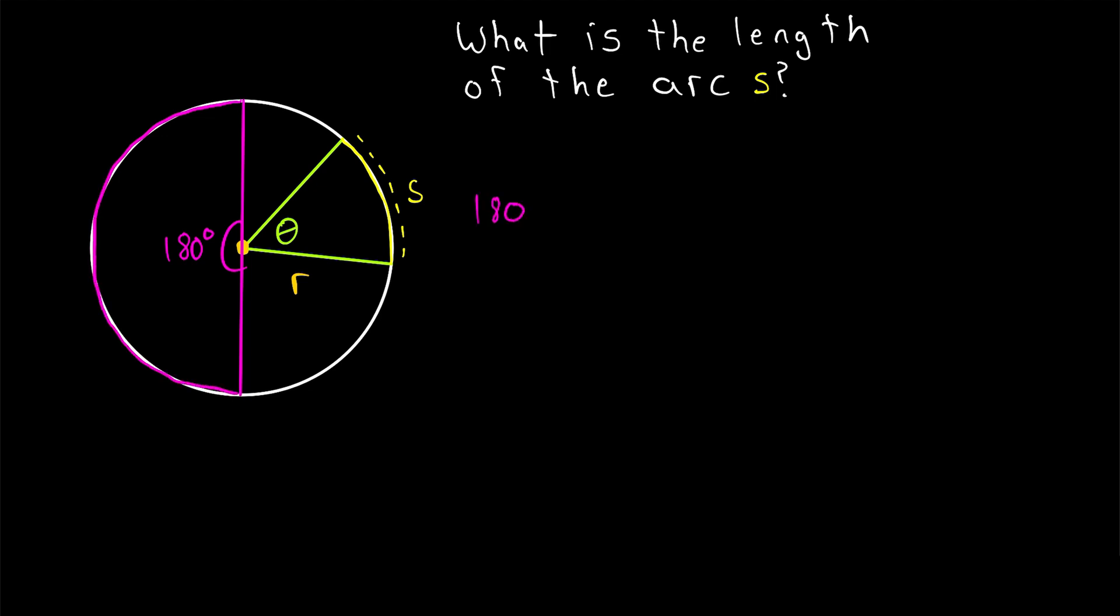Then what would the arc length cut by this angle be? Clearly, the central angle of 180 degrees is half of the total amount of degrees, 360, in a circle. And the length of the arc cut by that angle would have to be one half of the circumference of the circle.